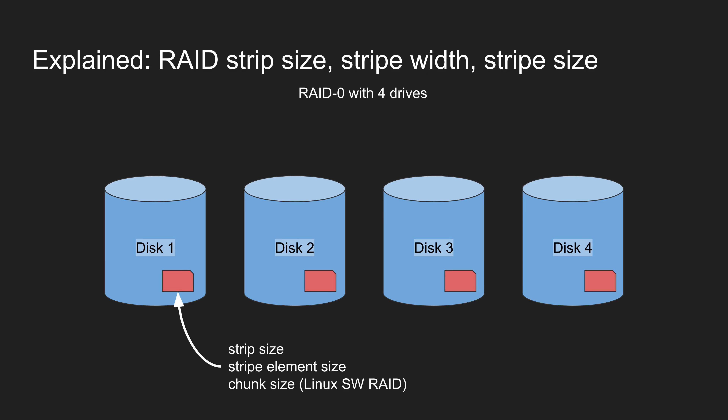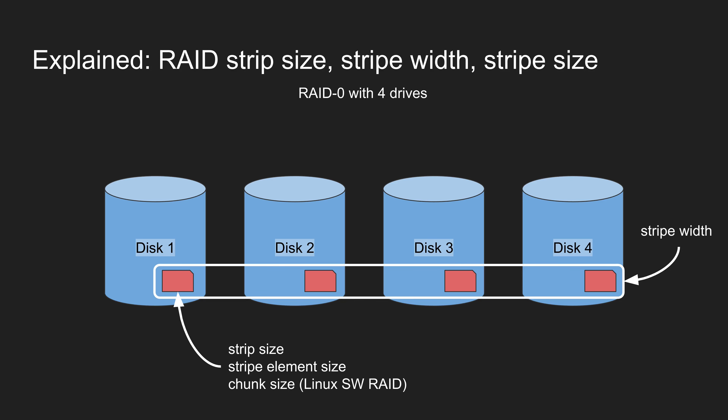With hardware RAID and even software RAID, we have to choose how we break that data up into chunks and how much of it we store on each individual drive. The size of those data chunks is what we call the strip size — one of the most important parameters you set when configuring your RAID volume. This is also known as the stripe element size, and with Linux software RAID it is known as the chunk size. The number of drives in the RAID 0 volume is the stripe width — in this case, four. And finally, the stripe size is the total amount of data in each stripe across all drives, calculated by multiplying the strip size by the stripe width.